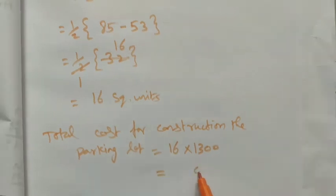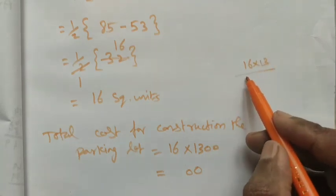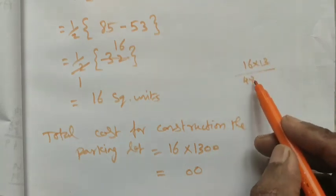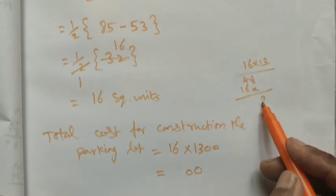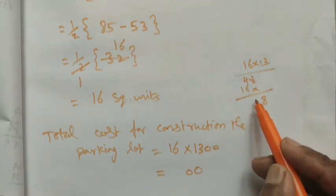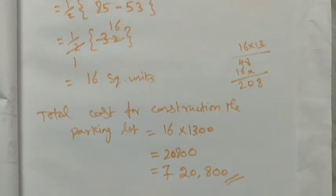16 times 1300 equals 20,800. The total cost is rupees 20,800 for the parking lot. Thank you students.